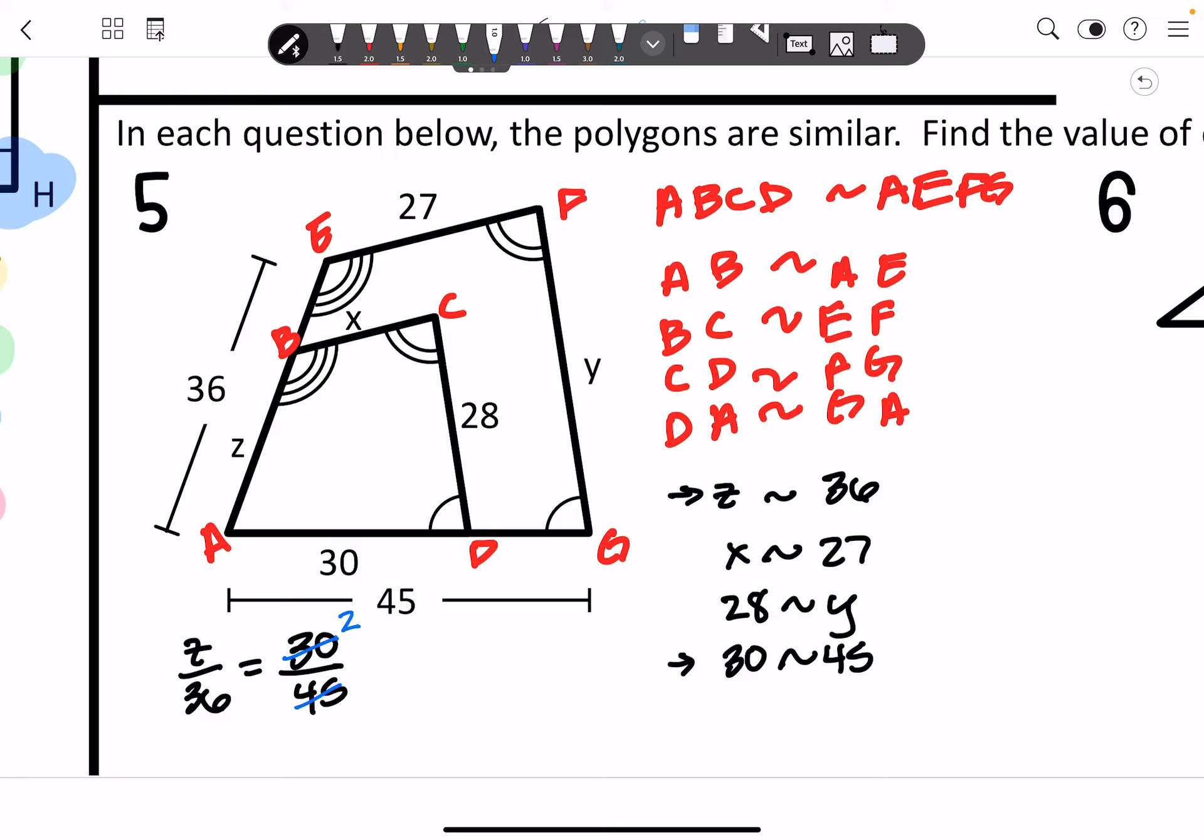I'm going to simplify that to make my life easier. And it simplifies to 2 thirds. So then I can cross multiply and I get 36 times 2 is equal to 3Z. So what is 72 divided by 3?